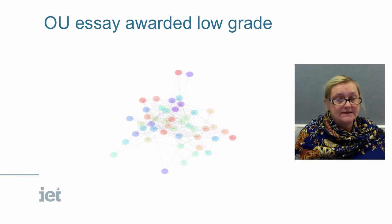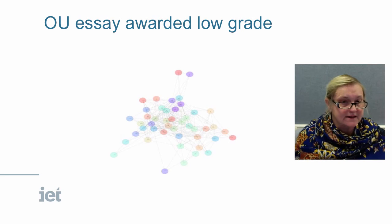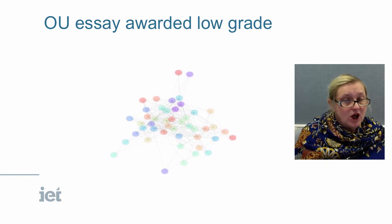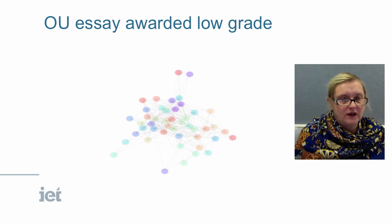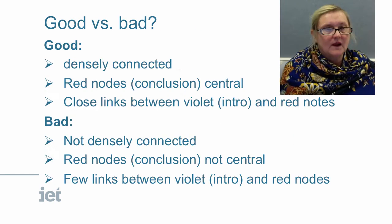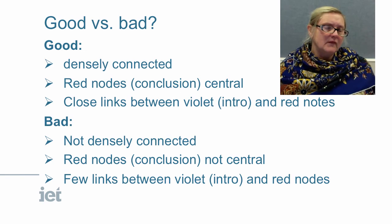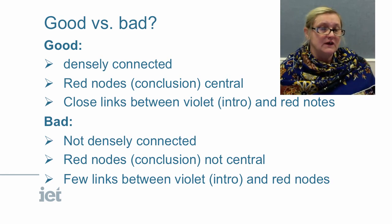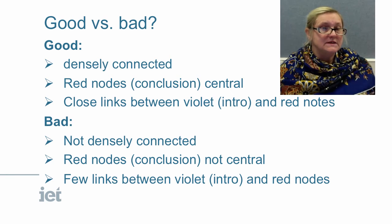Here's a low grade essay — very scattered, not well connected. The red nodes — the introduction — are scattered, some in the periphery, whereas the conclusion is coming more into the centre, though some are extraneous too. So even in the visualisation, we can start to pick out what's good and what's not such a good essay, and where the density and connectedness comes into play.